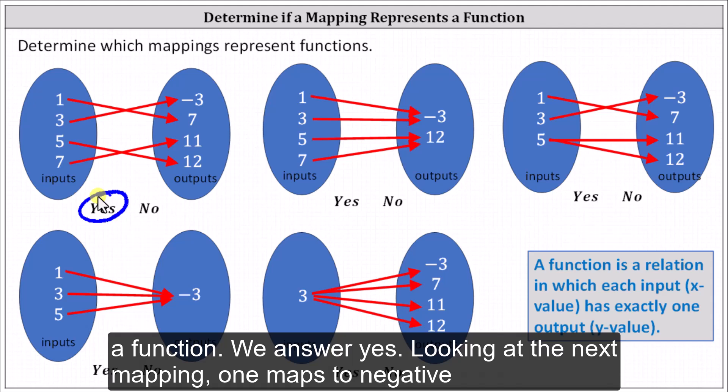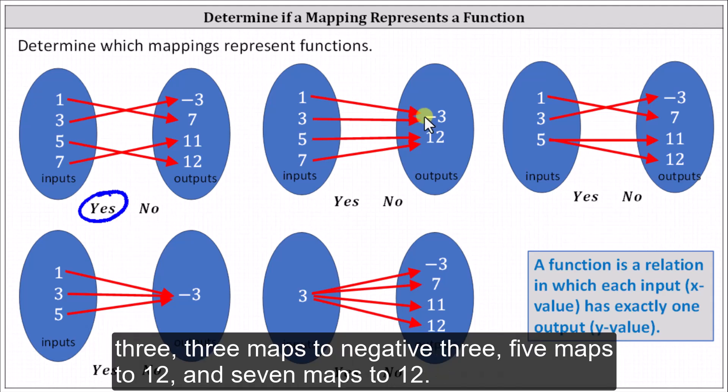Looking at the next mapping, one maps to negative three, three maps to negative three, five maps to 12, and seven maps to 12.